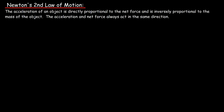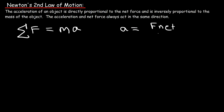The main idea behind Newton's second law of motion is that the acceleration of an object is directly proportional to the net force and inversely proportional to the mass of the object. The net force is the product of the mass and the acceleration, so the acceleration is equal to the net force divided by the mass.